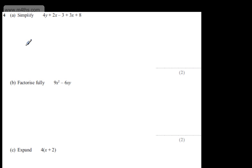This is question number four. In part A, we're asked to simplify 4y + 2x - 3 + 3x + 8. The question carries two marks. If we start with the terms in y, we only have 4y. So I'm going to start off with 4y.